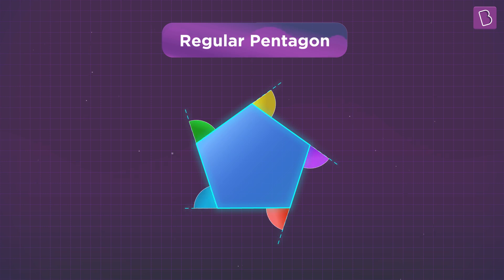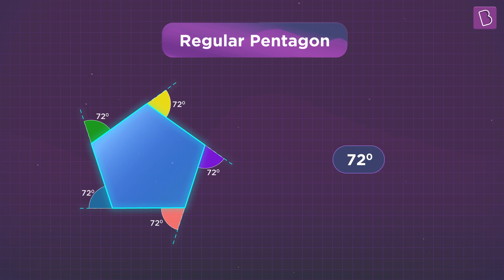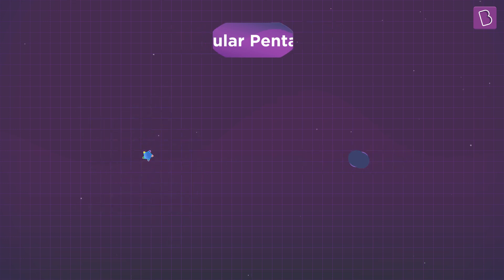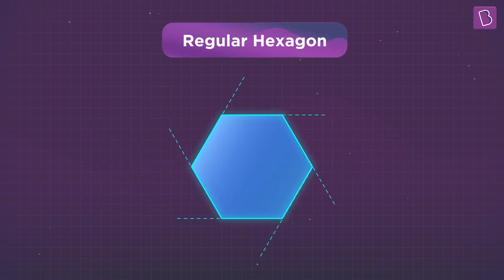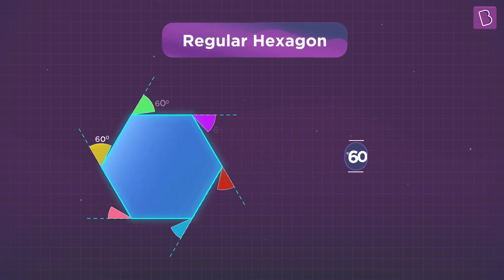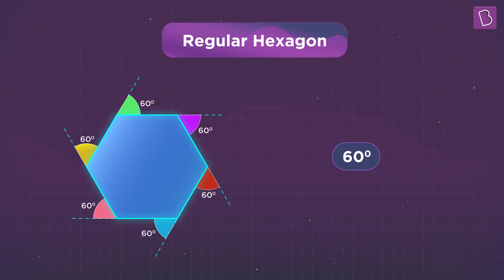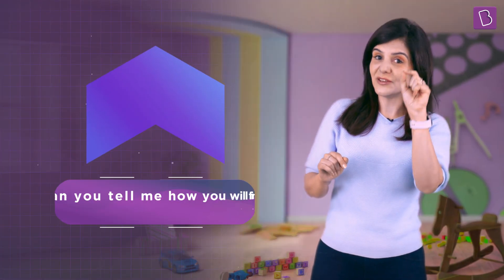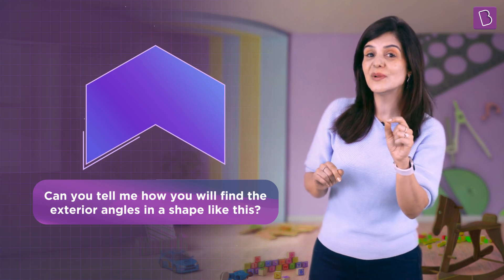Let's take an example: a regular pentagon's five exterior angles of 72 degrees each add up to 360 degrees in total. And so will a regular hexagon, which has an exterior angle of 60 degrees — adding all six of them up gives you 360 degrees.